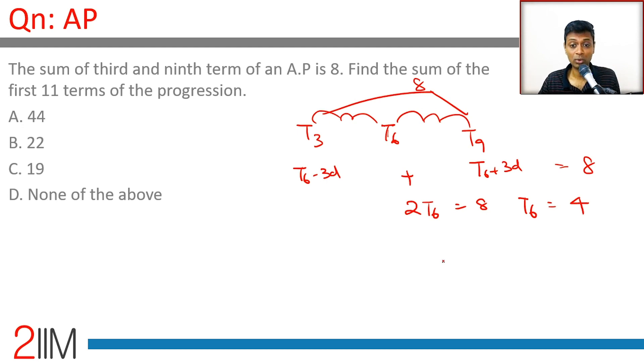The sixth term is 4. You have to find the sum of 11 terms: T1, T2 till T6 till T11. Think about it.